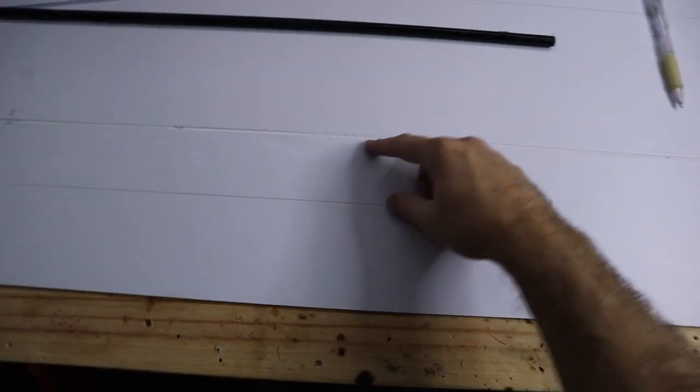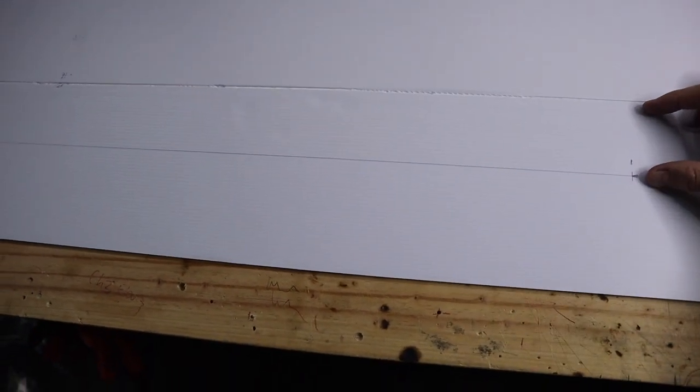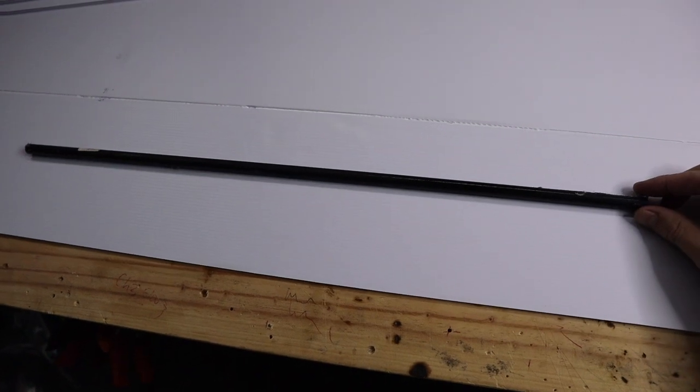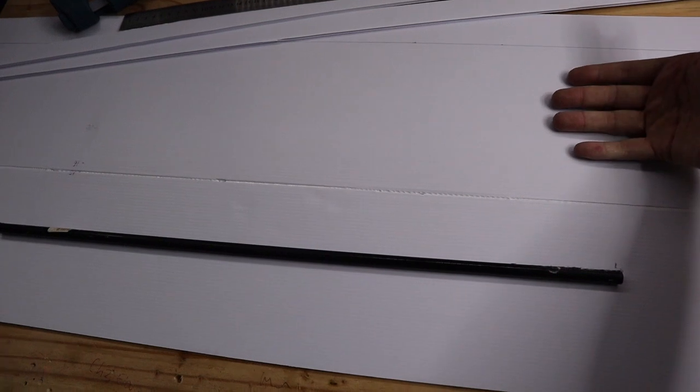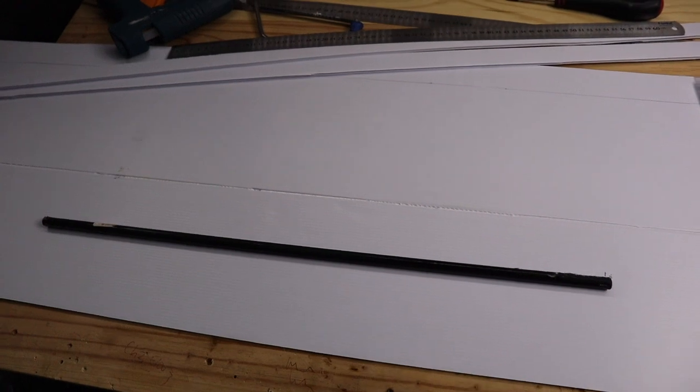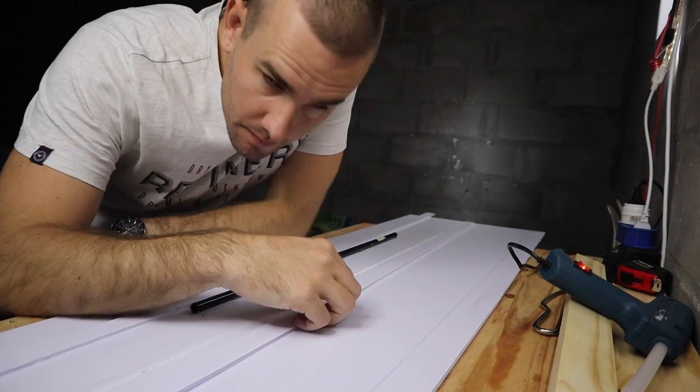This is my leading edge over here, and then I've just measured in six centimeters for where the spar is going to go. Then once that's glued in place I'm going to fold over the top surface of the wing and glue it down over here.